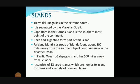Let's continue with the islands of South America. There are three important island groups. The first is an archipelago in the south — that is Tierra del Fuego Island. The next is Falkland Island, also in the south, about 300 miles away. The third is Galapagos Island. Tierra del Fuego lies in the extreme south and is separated from the mainland of South America by the Magellan Strait. Cape Horn on Hornos Island is the southernmost point of the continent. Chile and Argentina form part of this island.